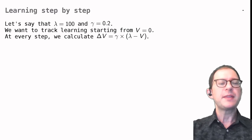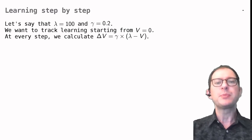Let's say that lambda is 100 and gamma is 0.2. We want to track learning starting from an initial value of V equals zero, that is, no association between the CS and the US.